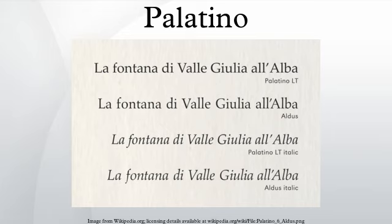Digital type foundries selling authentic versions of Palatino and derivative families include Linotype, under the name Palatino Linotype, which is shipped with Windows 2000 or later and Microsoft Office Professional Edition 2003, and Adobe Systems under license of the trademark Palatino from Linotype. Due to Linotype's trademark on the name Palatino, other foundries use other names. URW++ sells its version as URW PalladioL, later released under a free and open source license.